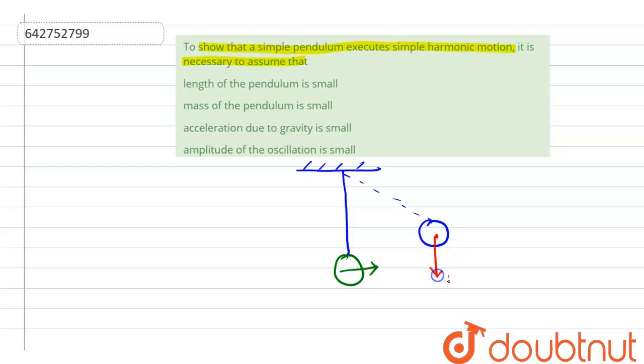You know that vertically downward there is going to be mg acting. Let's say it is displaced by a small angle theta. So, if I am resolving this mg, I will be getting mg sin theta component, which is towards the center or towards where the mean position is there.